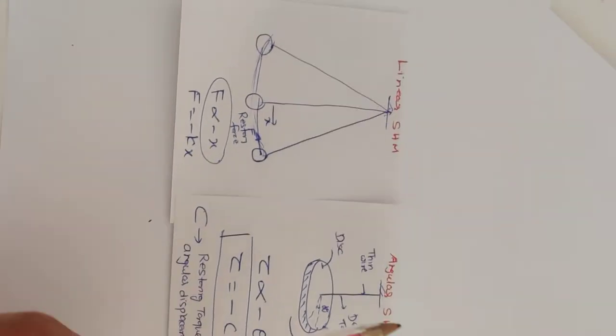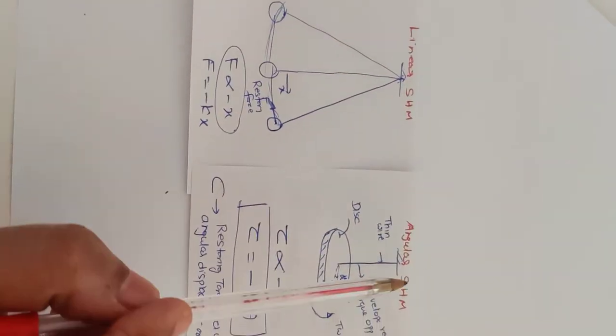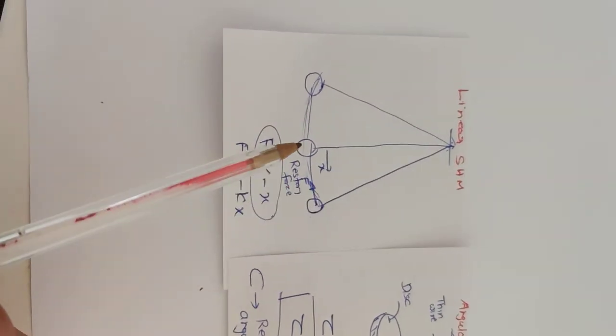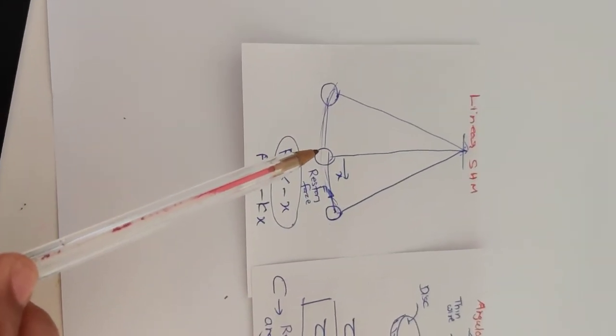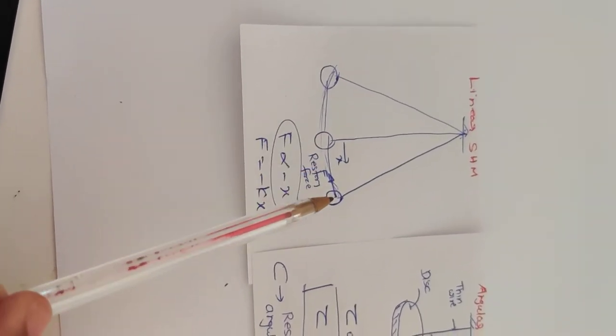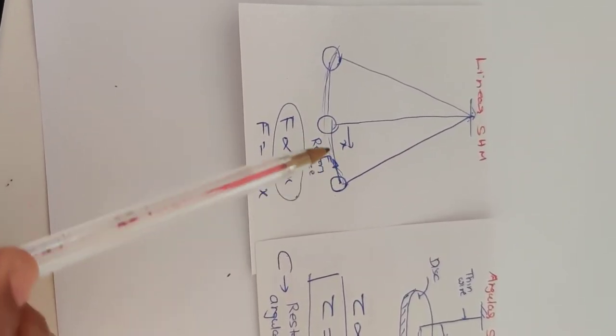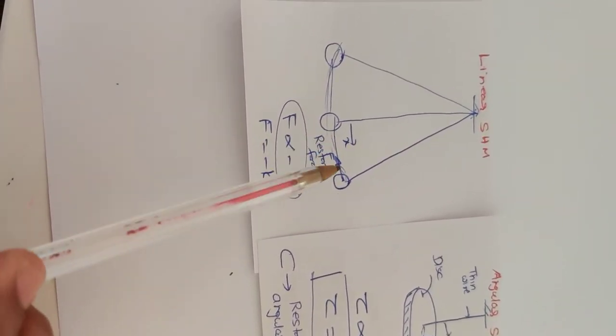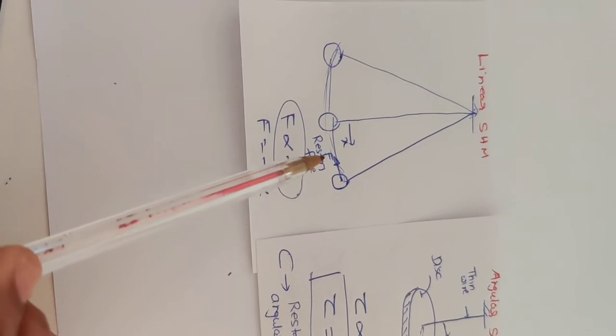We'll understand the concept of angular SHM by comparing linear SHM. You remember in linear SHM, I had displaced this bob by a small distance X towards right and restoring force was acting to the left. And we have seen that as X increases, F also increases.